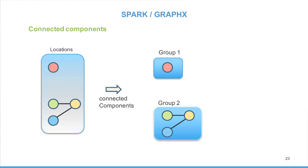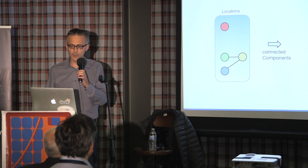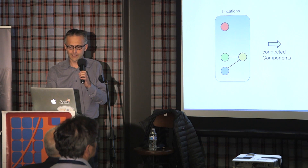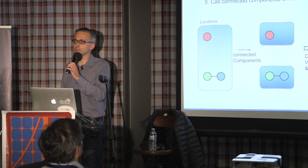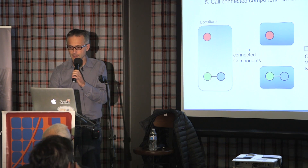The last algorithm we use is connected component, which computes the connected component membership of each vertex and returns a graph with the vertex value containing the lowest vertex ID in the group. We call connected components on the location graph and get two connected groups. For each group we can create the business — so for example, if you have a number of Starbucks locations, you link all those locations together and create the parent company for Starbucks.